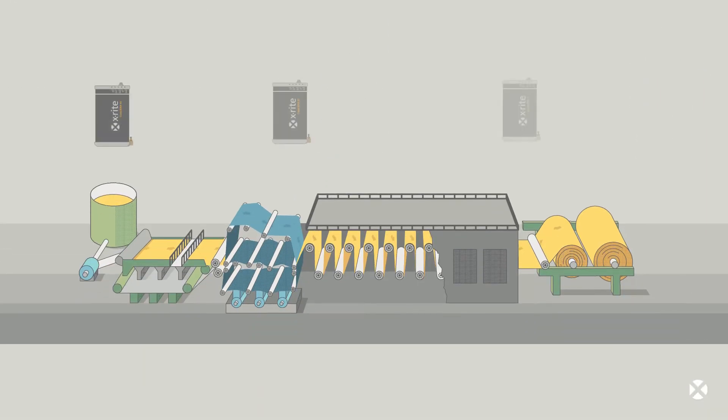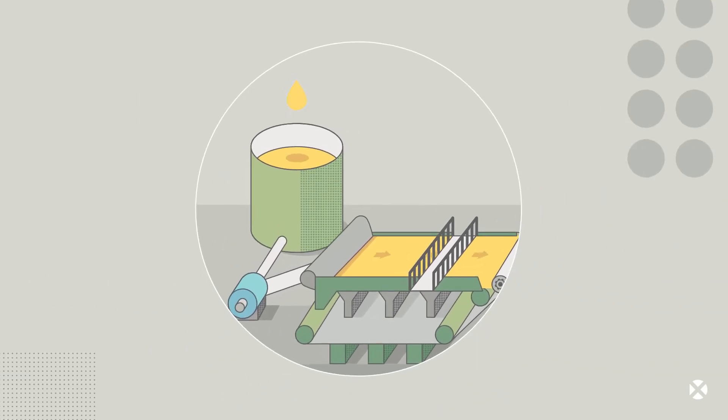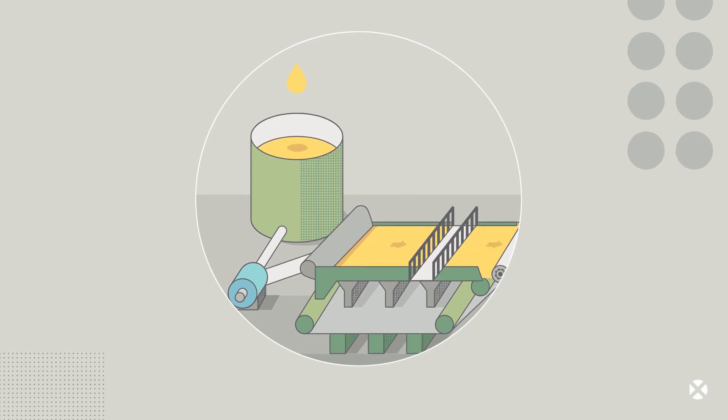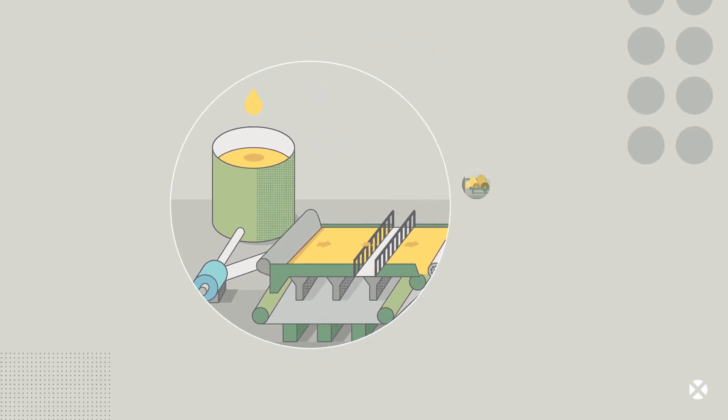An inline color management system from X-Rite helps get the color right by controlling color at three critical places on the line. In the liquid paper stock as an early warning before the run even starts to achieve consistency from batch to batch.